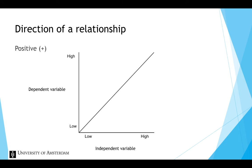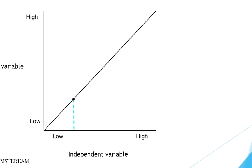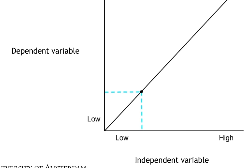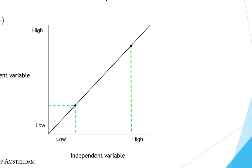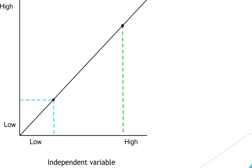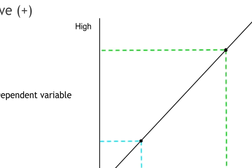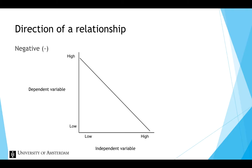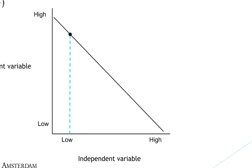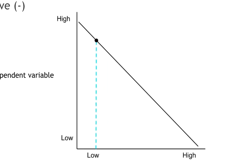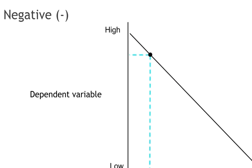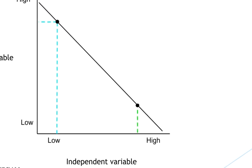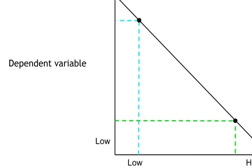In a positive relationship, low values on the independent variable are associated with low values on the dependent variable, and high values on the independent variable are associated with high values on the dependent variable. In a negative relationship, high values on the independent variable are associated with low values on the dependent variable.